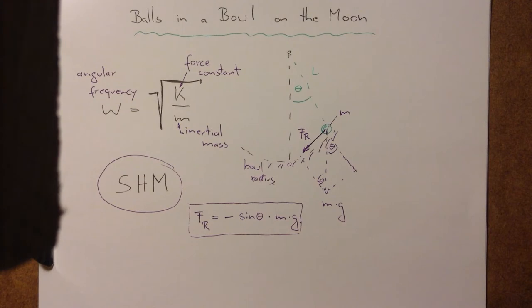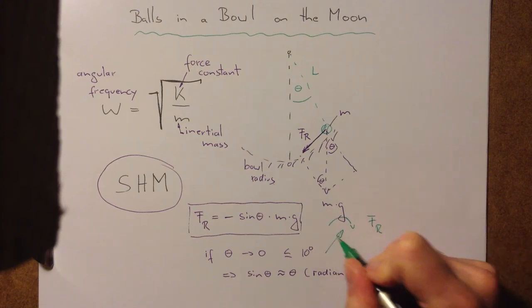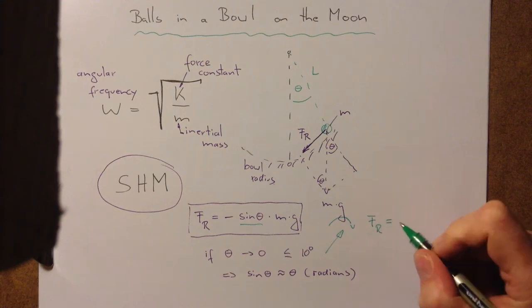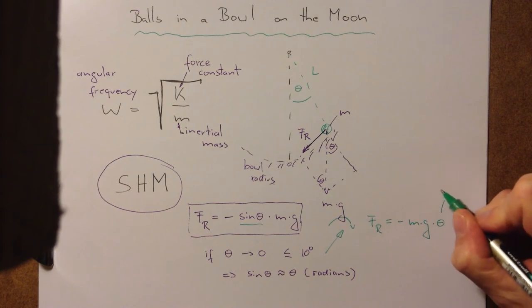Now, for small displacement angles, if theta is small, if it goes to zero, if it's of the order or smaller than something like 10 degrees, we can make the following approximation. We can say the sine of theta is approximately equal to theta. However, now, not measured in degrees, but measured in radians. And with that approximation, we can simplify our equation. We can get rid of the sine function in there and write the restoring force is equal to, FR is equal to minus Mg, the gravitational force, times theta in radians. That is the crucial equation.